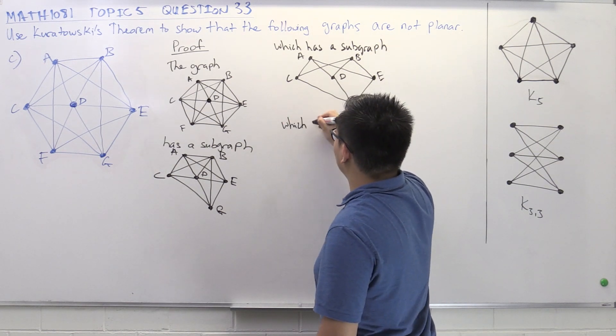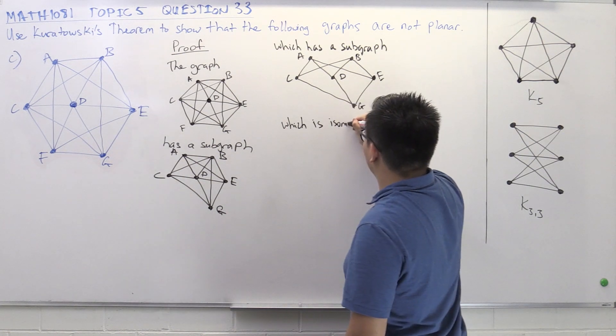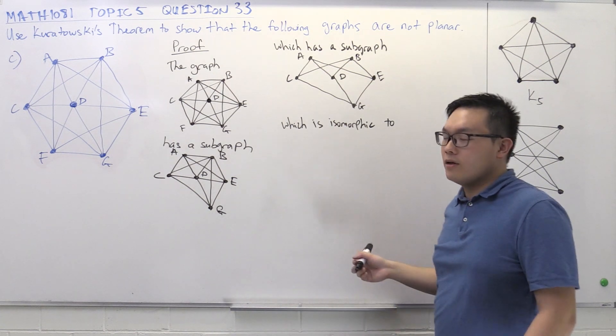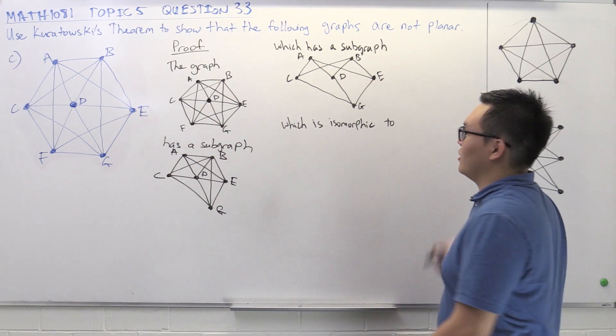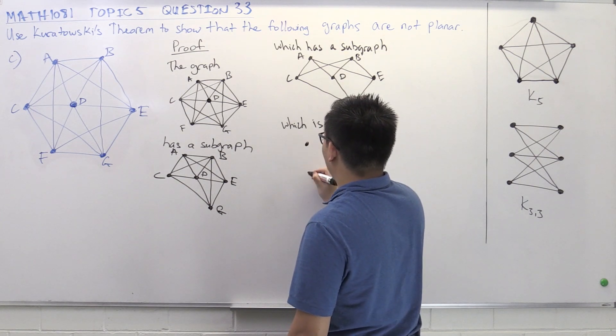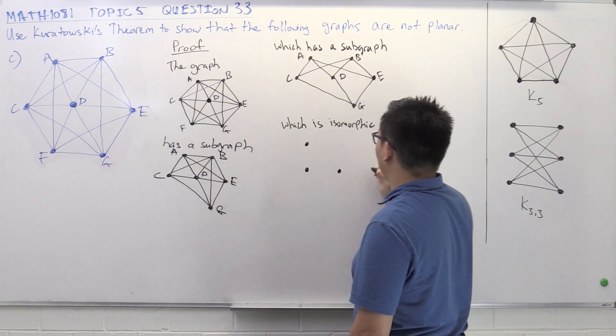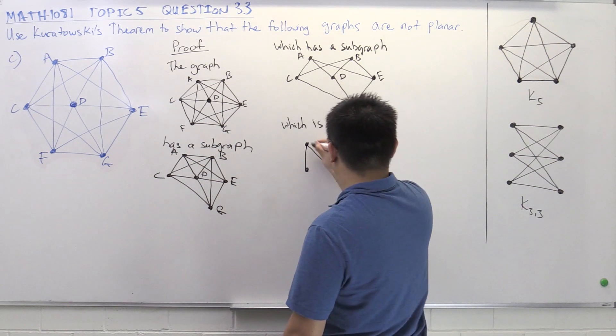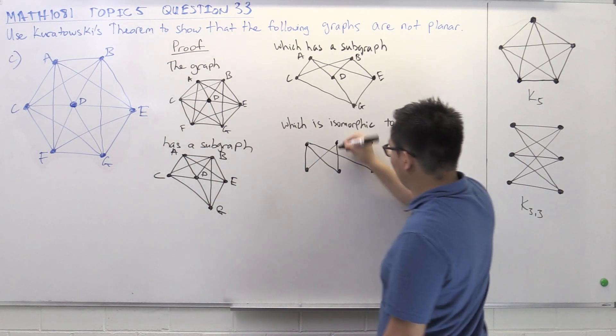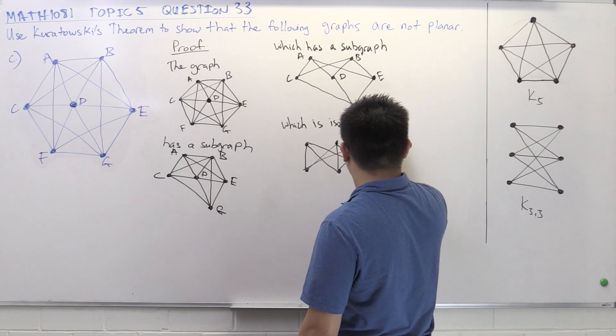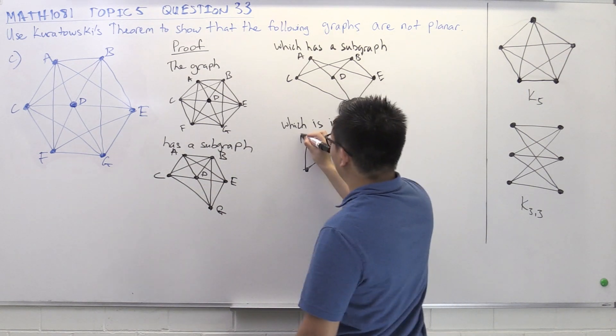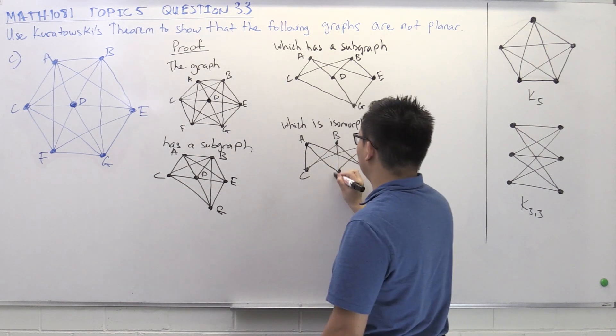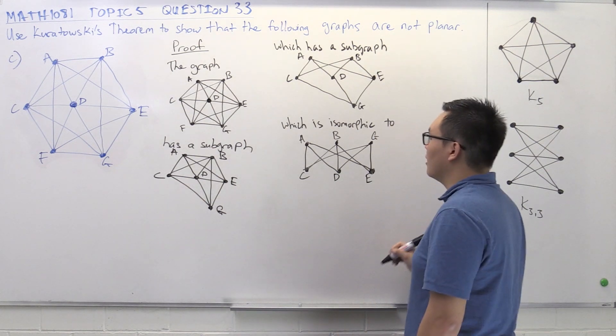And we just redraw this to the standard K33 drawing, which is isomorphic to... And we do this because we want to show the reader, or the marker, that we've actually gone and checked that this is actually K33. So we show that we actually know how we partition the vertices. So just systematically drawing a K33. And label the vertices. So we've got A, B, and G on one side, and C, D, and E on the other side. Which is K33.